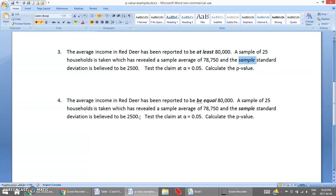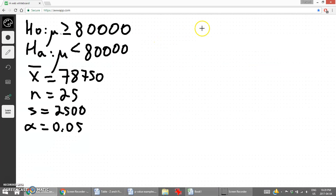We're going to use the p-value approach by calculating a p-value for a test statistic. Let's go to our whiteboard and here is the data. They believe that the average income is greater than or at least eighty thousand. The alternate hypothesis is that the average is less than eighty thousand. The sample mean is seventy-eight thousand seven fifty, sample size of twenty-five, standard deviation, and the level of alpha as given there.